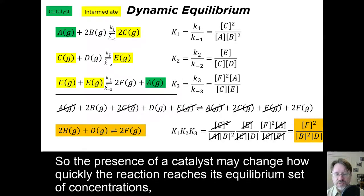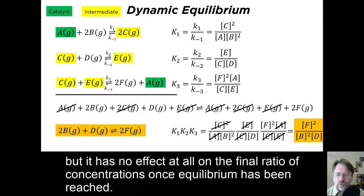So the presence of a catalyst may change how quickly the reaction reaches its equilibrium set of concentrations, but it has no effect at all on the ratio of concentrations once equilibrium has been reached.